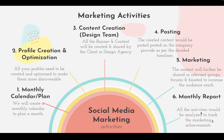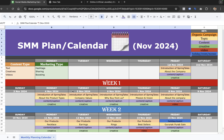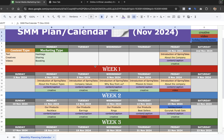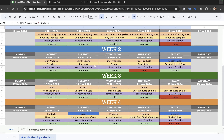Sometimes companies have different people for each activity, and sometimes one single person manages all six activities — it depends on the company hierarchy. But everything starts with the monthly plan or monthly calendar. This calendar is a kind of plan that tells us what activities we have to do for the project or company for a particular month.